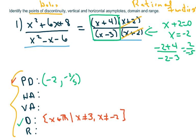Your horizontal asymptote has to do with the degree of the polynomial. In the numerator the degree is two, and the denominator is two. Since the degrees are the same, you divide by the lead coefficients. One divided by one is one, so we have a horizontal asymptote at y equals one.